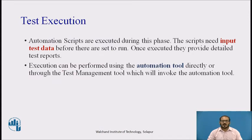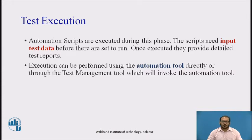During test execution, the automation scripts are executed. The scripts need input test data before they are set to run. Once executed, they provide detailed test reports. Execution can be performed using the automation tool directly or through a test management tool — for example, Quality Center invokes QTP for execution of automation scripts. Scripts can be executed on a single machine or group of machines, and execution can be done during the night to save time.